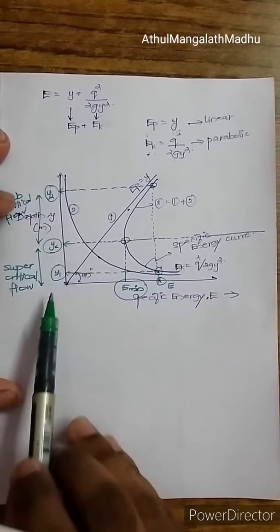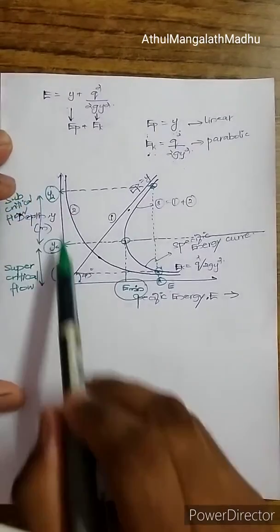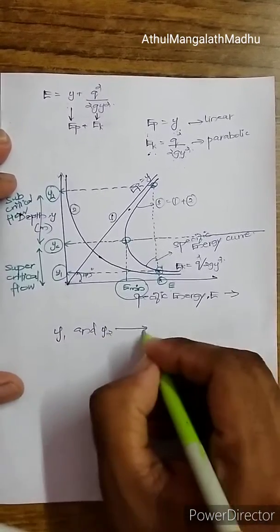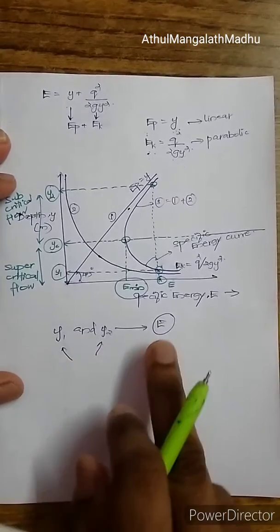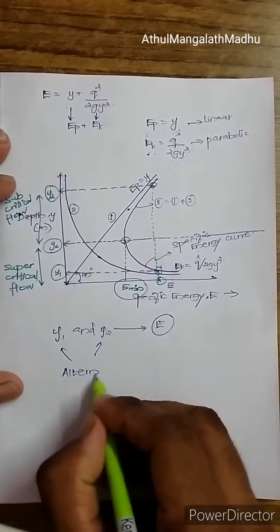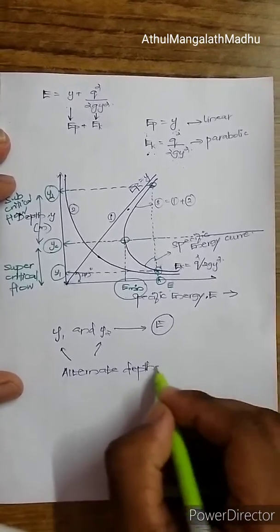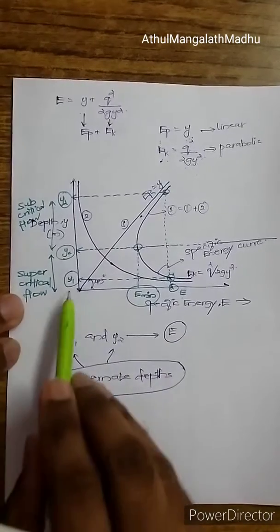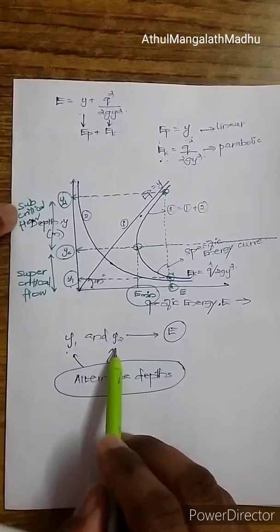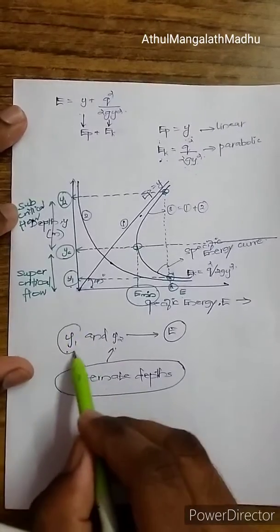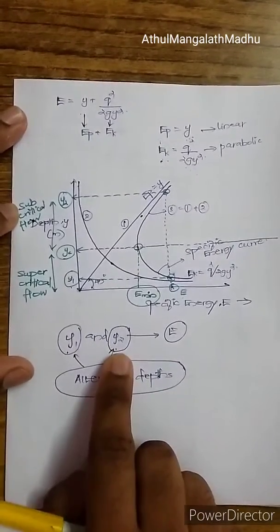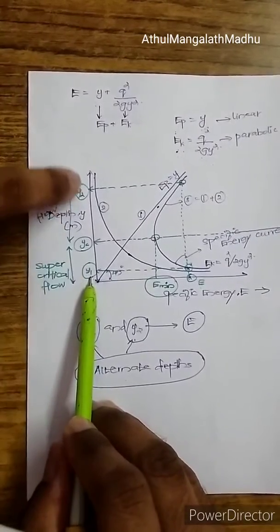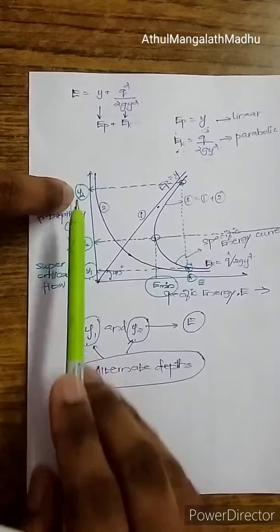For the two depths y1 and y2 that correspond to the same specific energy E, these are called alternate depths. One alternate depth corresponds to supercritical flow and the other to subcritical flow. Always remember that the depth corresponding to supercritical flow (y1) is less than the depth corresponding to subcritical flow (y2).